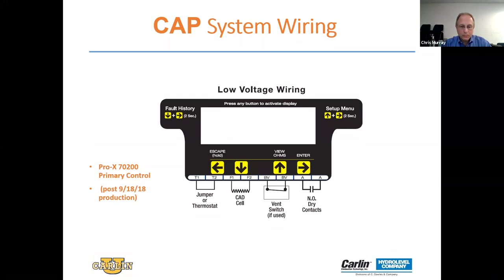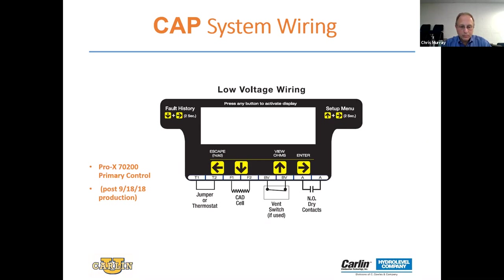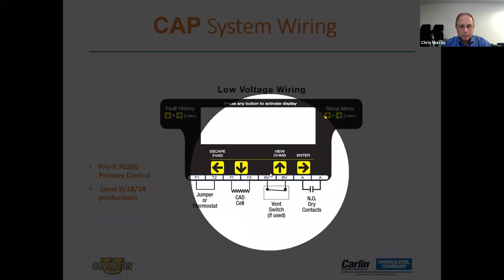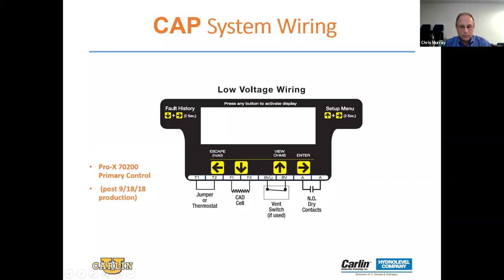The wiring on the system is simple. The Pro-X 70200 control was upgraded in September of 2018. The new programming allowed the features I'm about to describe to be built into the Pro-X control to manage the different scenarios encountered during testing. It's a simple two-wire connection — BV contacts. You simply connect two low-voltage wires right to those contacts, program the control, and you're up and running.